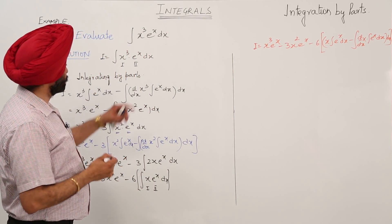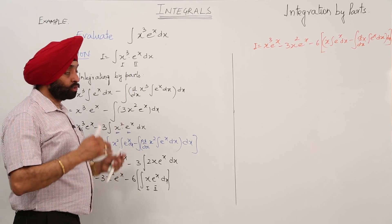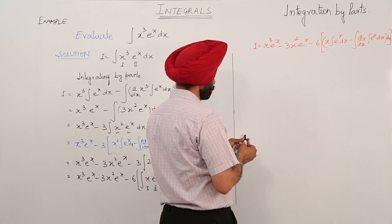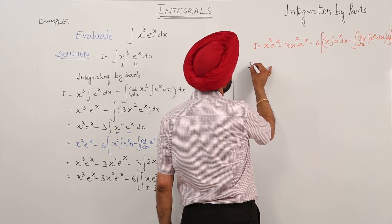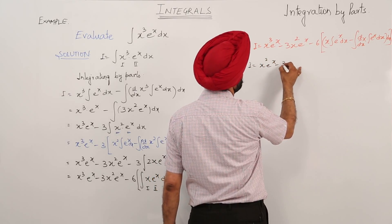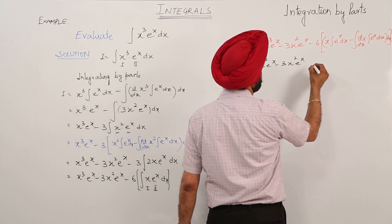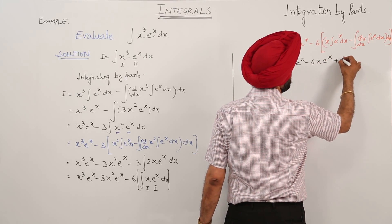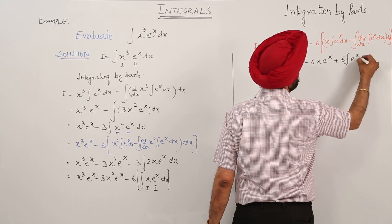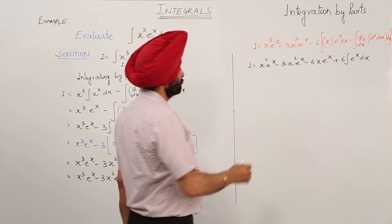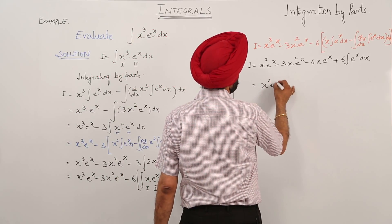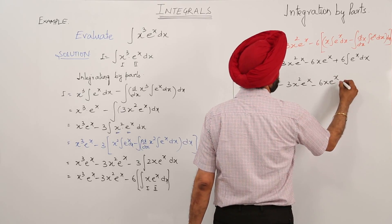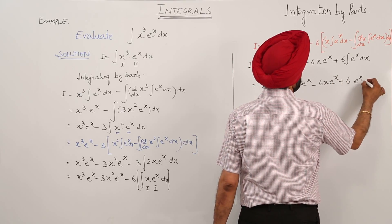I told you in the beginning that if you take the wrong choice of first and second function, your question will go on increasing and you can't integrate that part. Now for this part, we are having x cube e raise to power x minus 3x square e raise to power x plus 6 integration of e raise to power x dx, which gives 3x square e raise to power x plus 6 e raise to power x plus c.